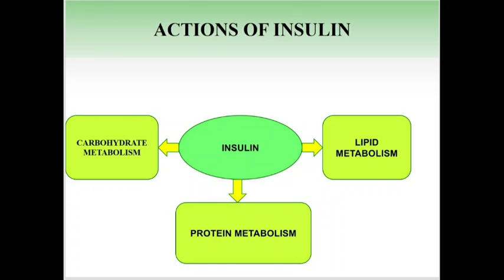In protein metabolism, insulin facilitates amino acid uptake and protein synthesis, and inhibits protein breakdown — this is its anabolic effect. In diabetes, there is an increased catabolic effect and negative nitrogen balance.